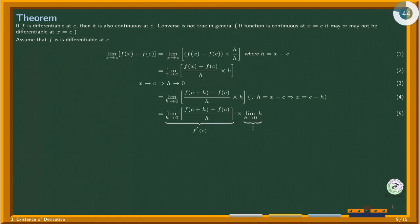The limit of h goes to 0 as h approaches 0. Hence the limit of f(x) minus f(c) is 0.